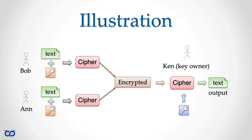If anyone uses Ken's public key to encrypt a message, only he can decrypt it with his private key. That's why he must keep his private key secure — if he shares it, someone else can decrypt messages meant only for him. If Ken is a talkative person who can't keep his key private, then there's no point sending him secrets.